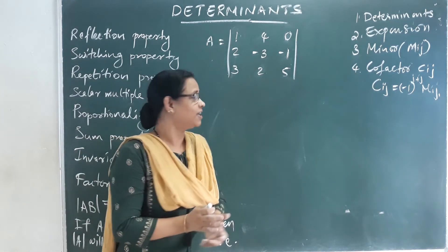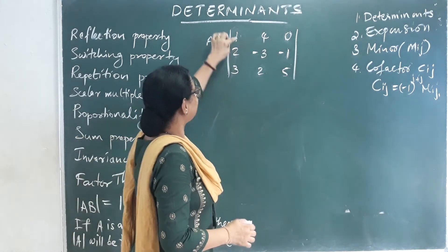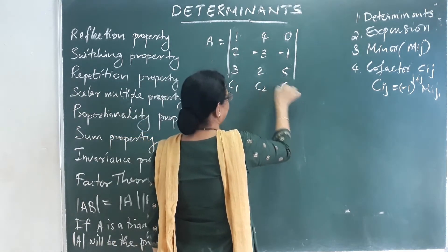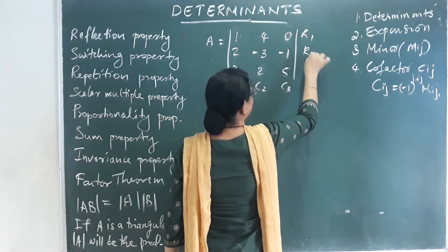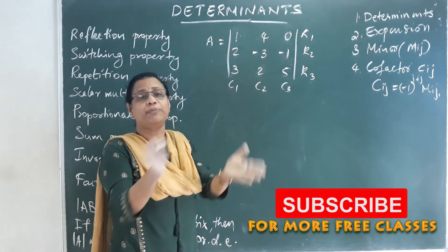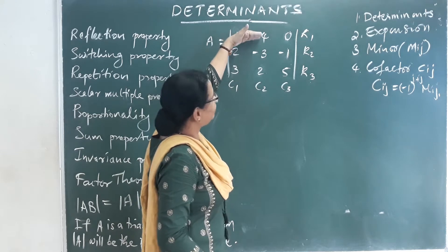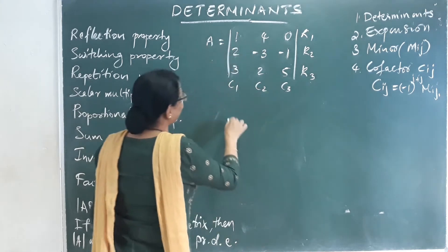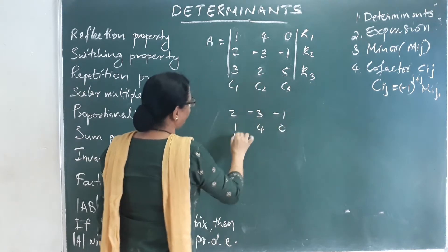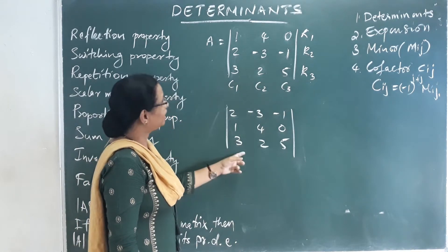The second property is the switching property. This is the first column C1, the second column C2, and C3. These are R1, R2, R3. In the second arrangement, R1 and R2 are swapped to R2 and R1. The second column values are 2, negative 3, negative 1, 1, 4, 0. The third column values are 3, 2, 5. This property is called the switching property.